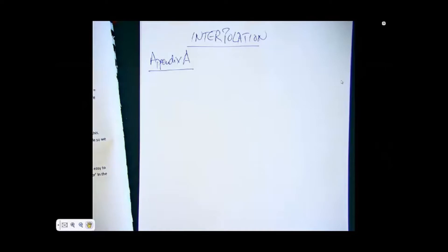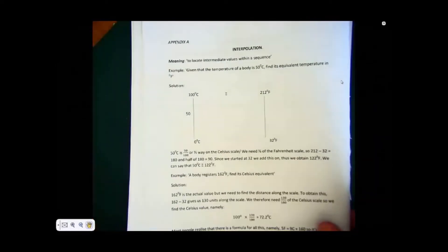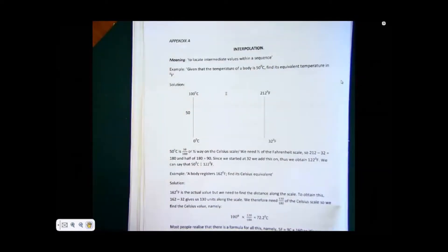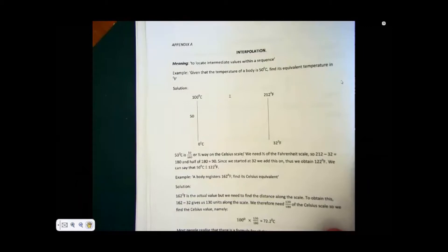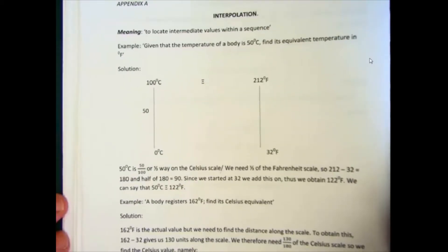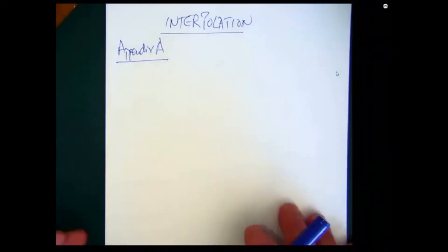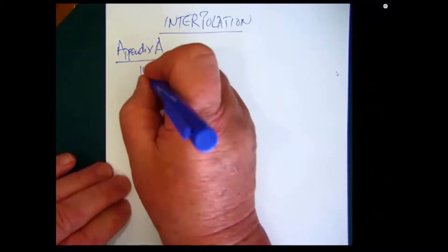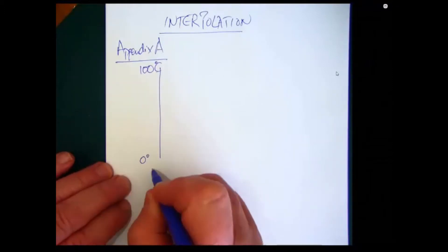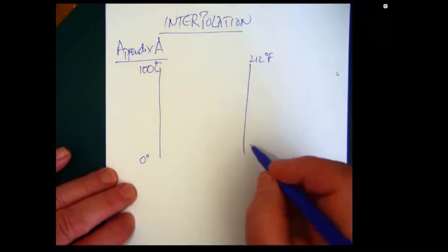Right, we're back again now with interpolation, and in your book this is the page that we are dealing with. The meaning of interpolation simply is to locate intermediate values within a sequence, and the one that I've chosen here, because most people seem to know a little bit about temperature, is the example of Celsius to Fahrenheit. In the book I've actually drawn out the two scales, so Celsius runs up to 100 from 0, and Fahrenheit runs up to 212 from 32.